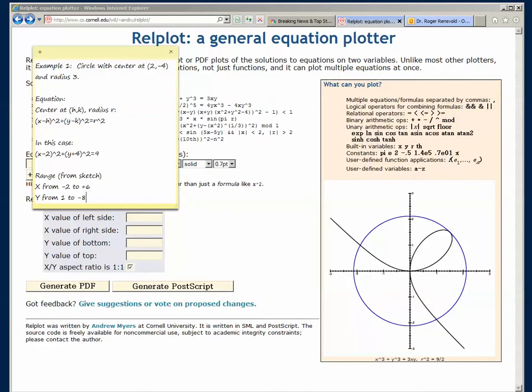The first example we're going to look at is a circle with the center at point (2, -4) and a radius of 3. The equation for a circle with center at point (h,k) and radius r is as follows: (x-h)^2 + (y-k)^2 = r^2. Where the center is at (h,k) and the radius is r.